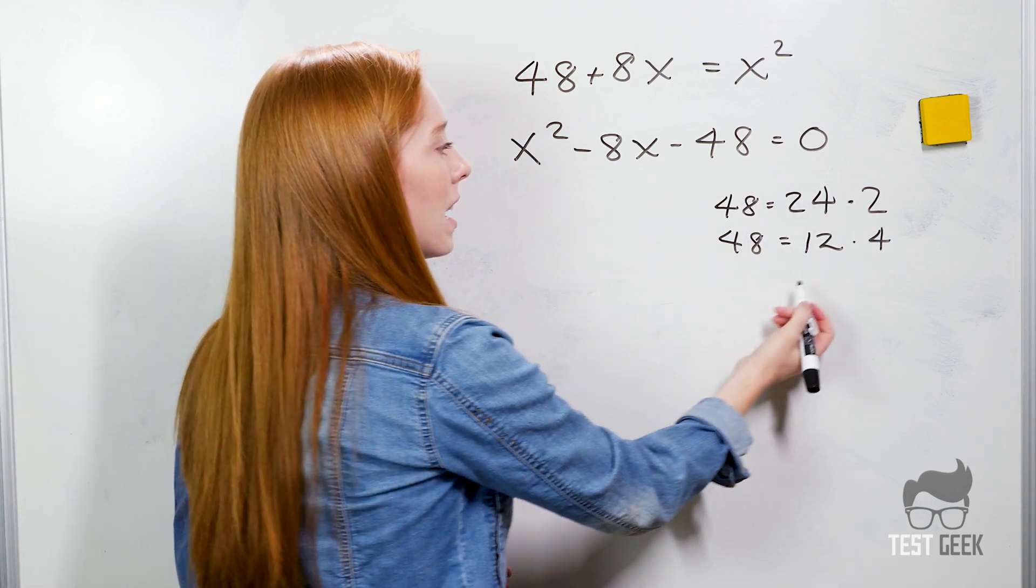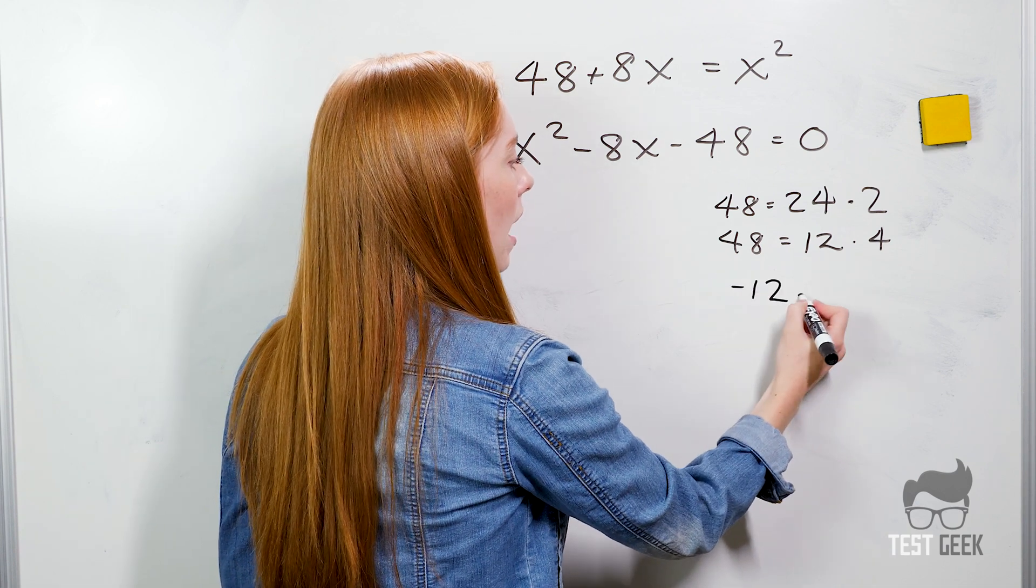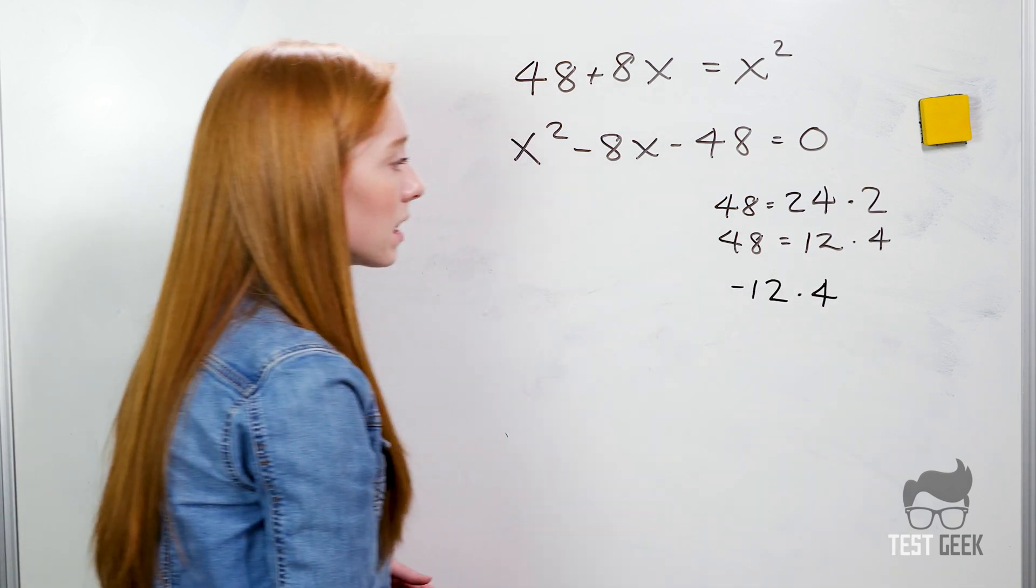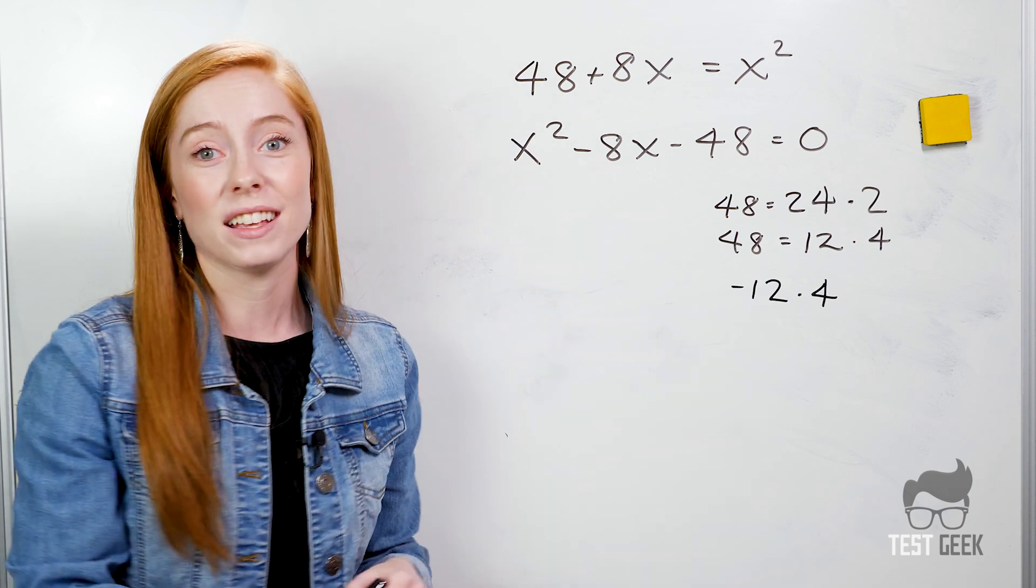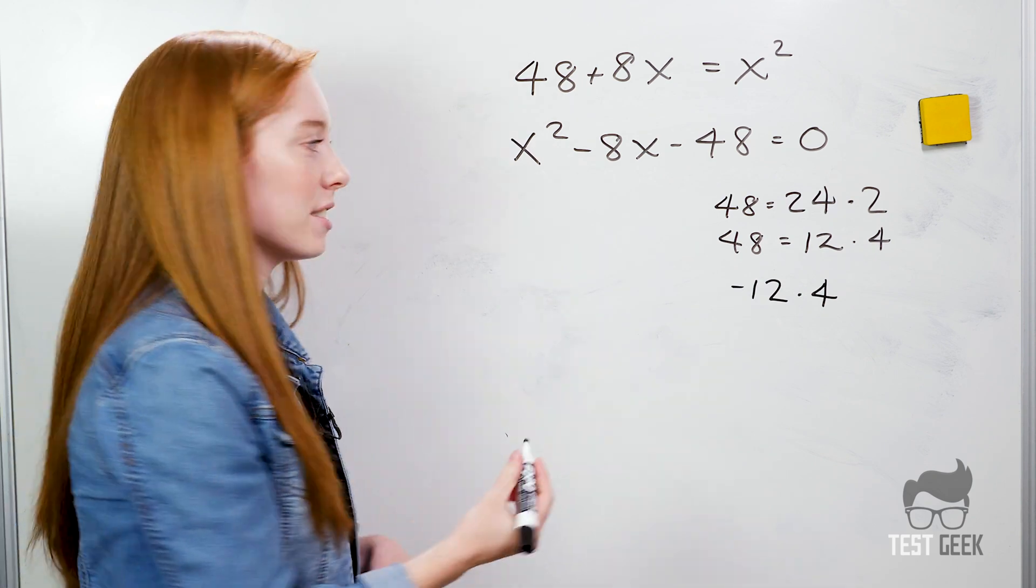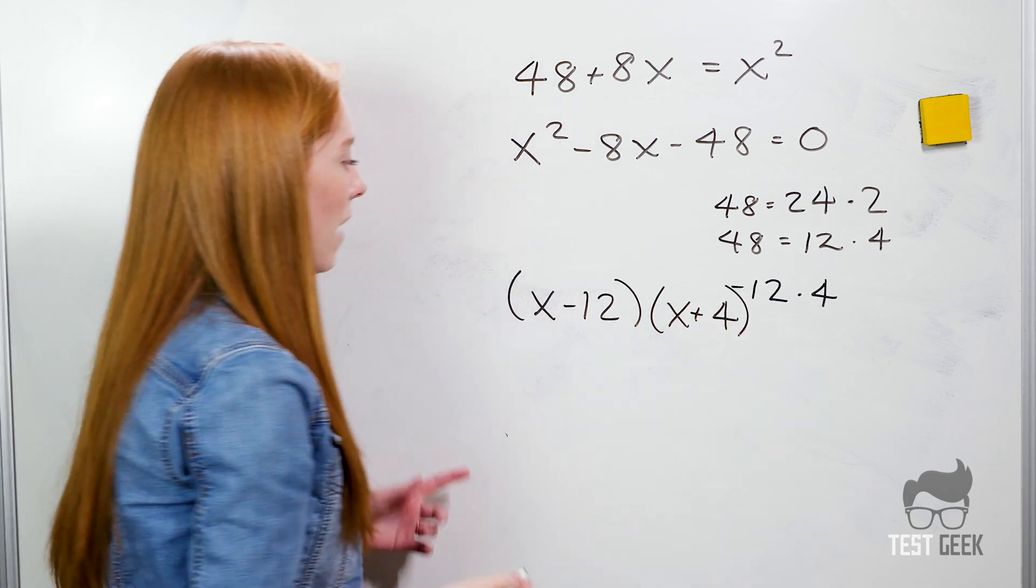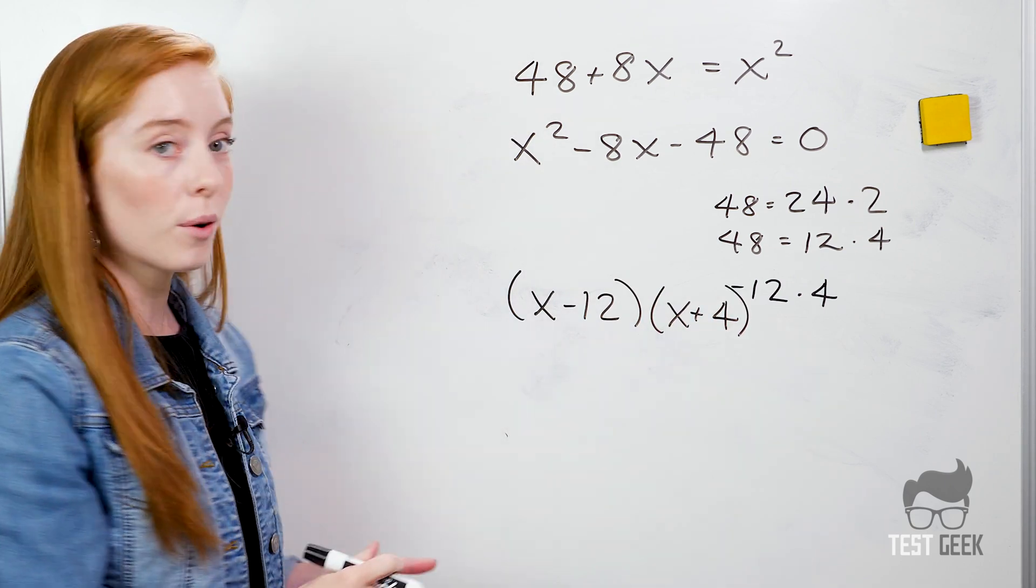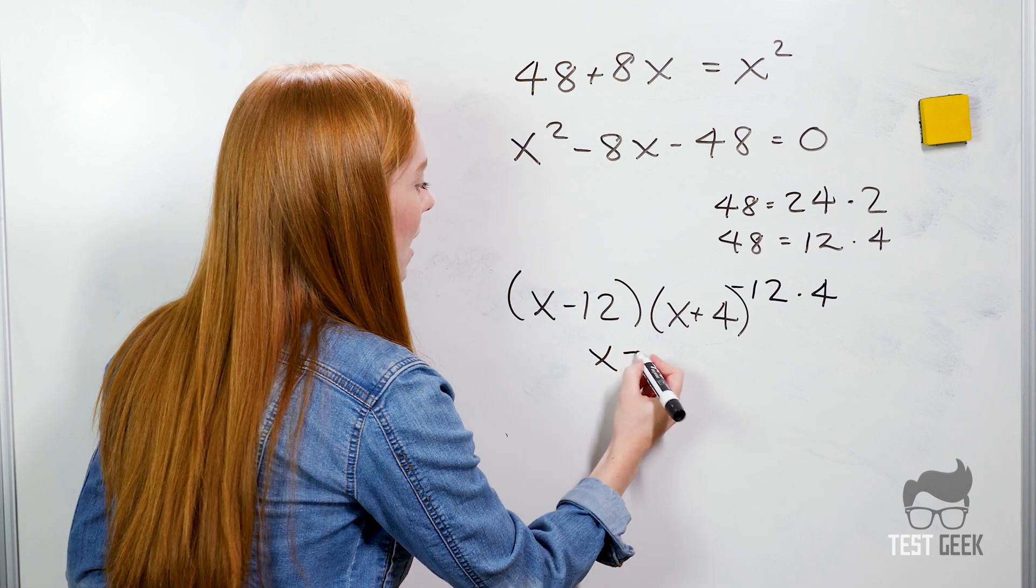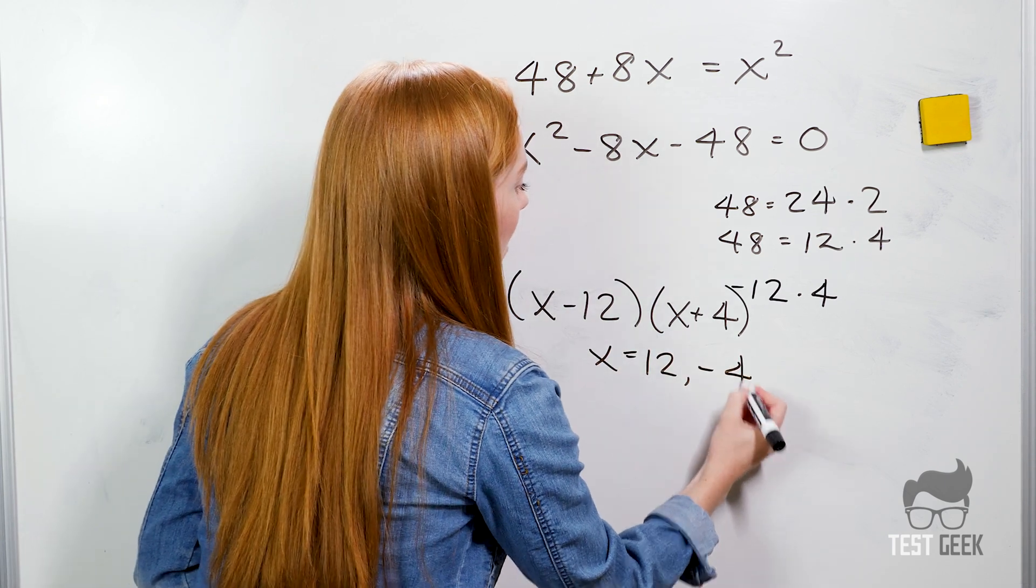So we know one of them has to be negative because we're looking for a negative multiple. So we could do negative 12 times positive 4. That will give us negative 48 and that will add up to give us negative 8. So we found our two factors. We have x minus 12 times x plus 4 and our answers are going to be x equals 12 and negative 4.